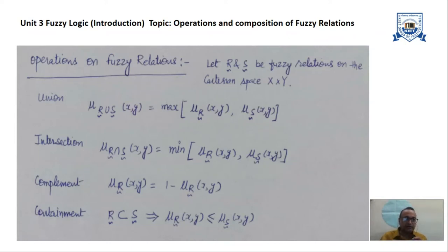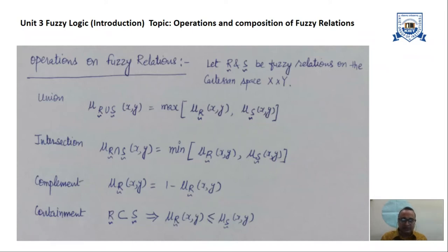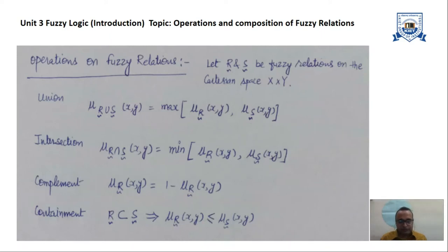Now, talking about the variety of operations we can perform on fuzzy relations: suppose we are having two fuzzy relations R and S. R is a fuzzy relation, and similarly S is also a fuzzy relation on the Cartesian space X cross Y. After performing different operations, you will get a sort of relation. We are doing the union of the two relations — these two fuzzy relations have been established onto the universe of discourse — and we again get a resultant relation.